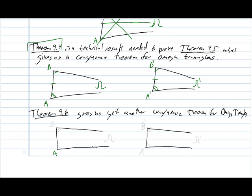Theorem 9.6 gives us yet another congruence result. If you have two omega triangles, AB omega, and A prime, B prime, omega prime, then it would be enough to show that the angle at A is equal to the angle at A prime, and the angle at B is equal to the angle at B prime, and that would actually force the sides, AB and A prime, B prime, to have the same length, which is really kind of mind-blowing.